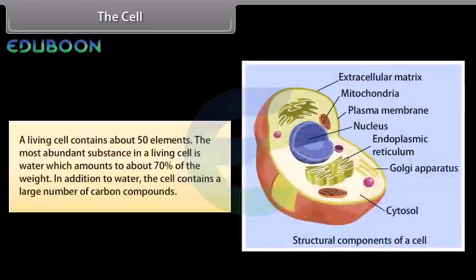A living cell contains about 50 elements. The most abundant substance in a living cell is water, which amounts to about 70% of the weight. In addition to water, the cell contains a large number of carbon compounds.